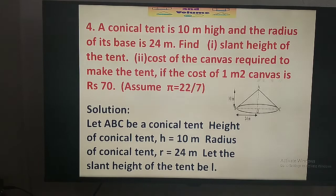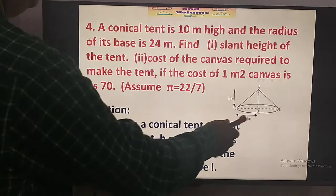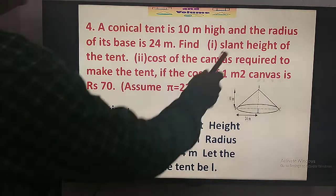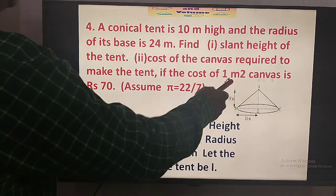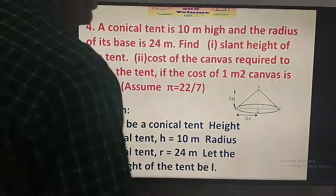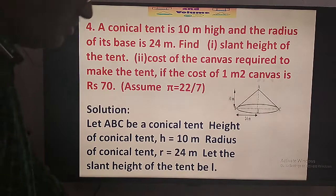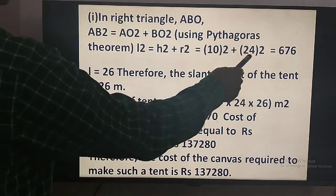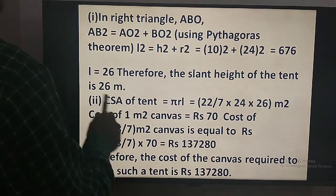Now what is given in problem number 4: a conical tent 10 m high and the radius of its base is 24 m. First we find the slant height using the Pythagoras theorem: L squared equals H squared plus R squared, which is 10 squared plus 24 squared equals 676. So L equals the square root of 676, which is 26 m.